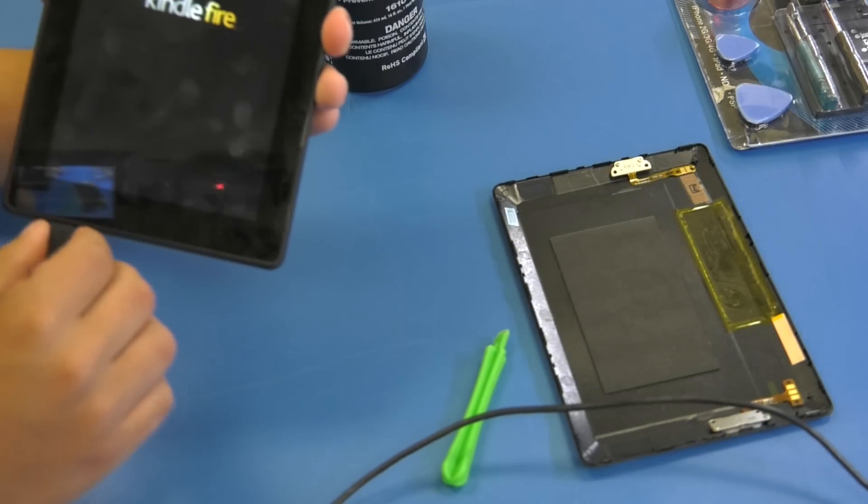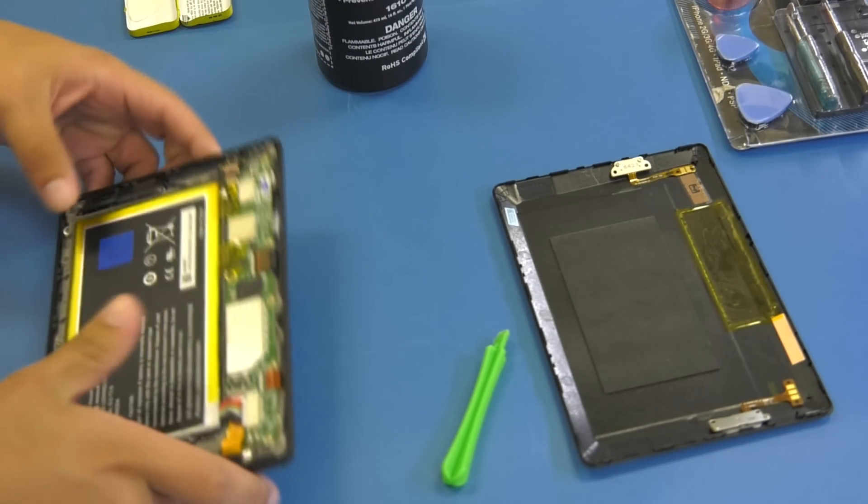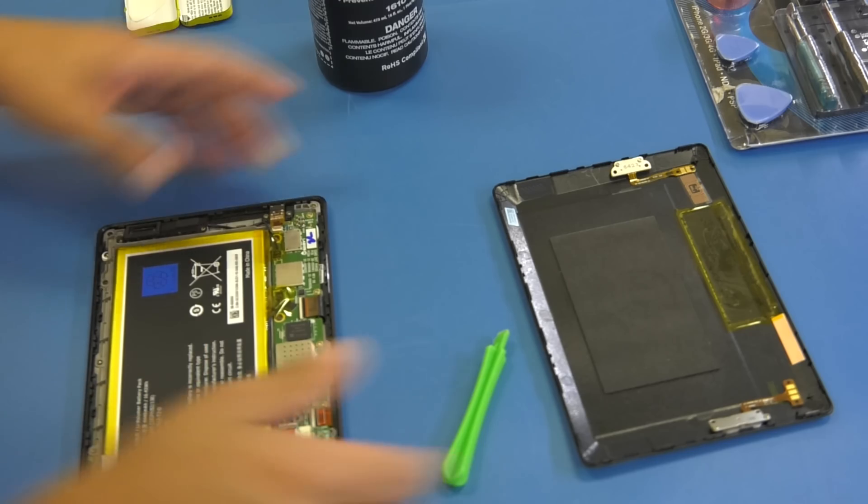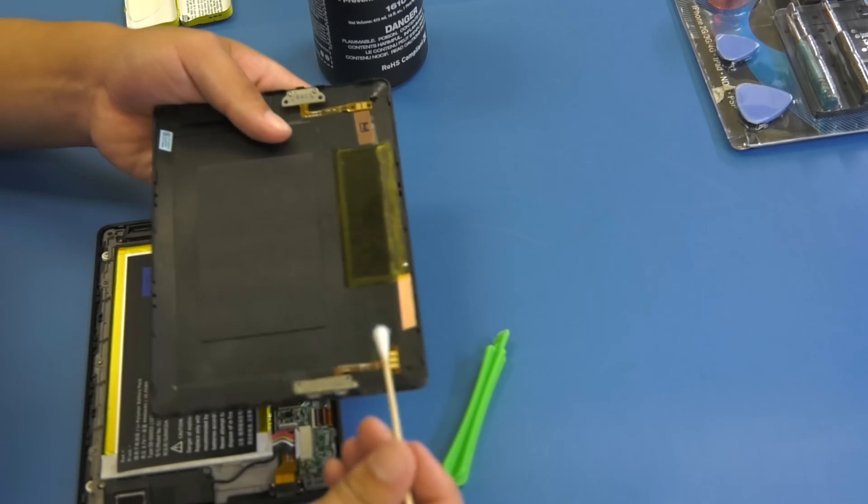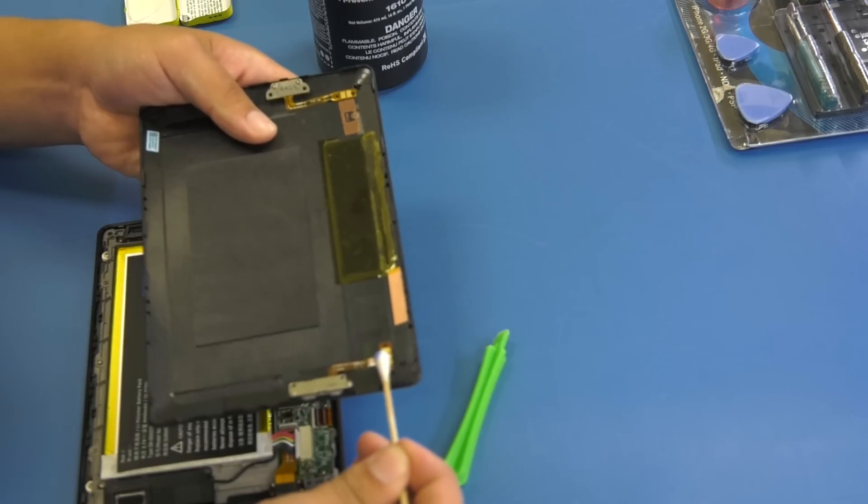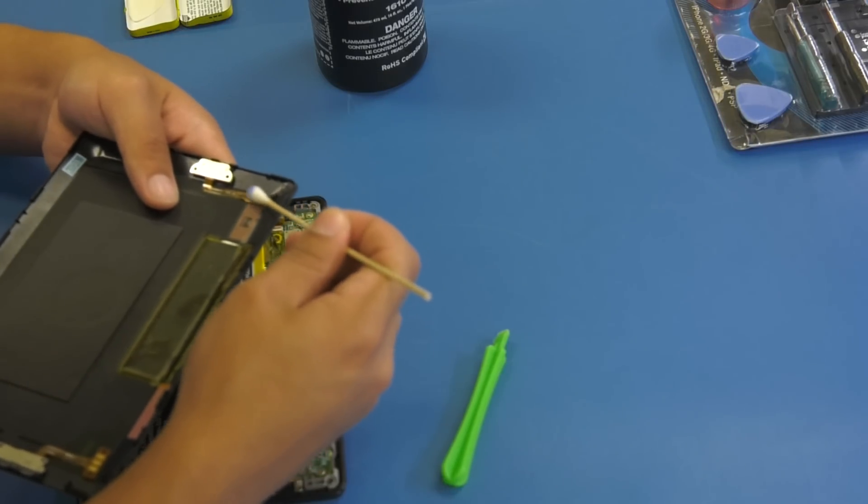Now that we know that it works, we're going to unplug it and we're going to put everything back together. Before that, we're going to just clean out the connectors from the power and the volume connector.